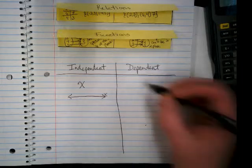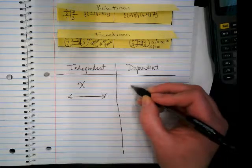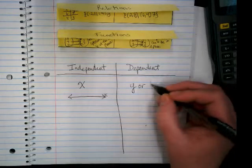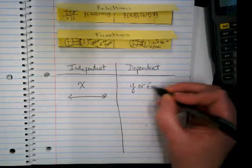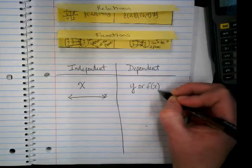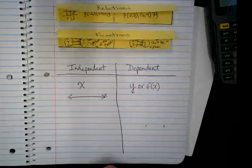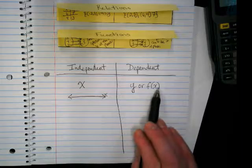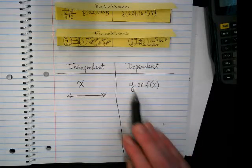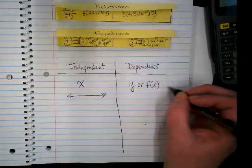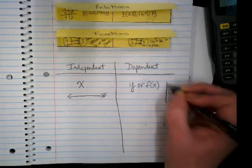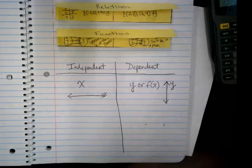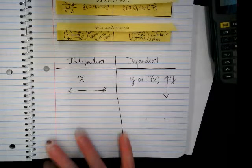What does that mean about dependent? It's the Y values or we're going to start seeing things that look like this in our work: function of X. That means whatever the function is, whatever I put in for X tells me what my Y is or my function of X.